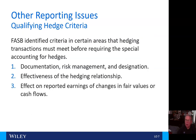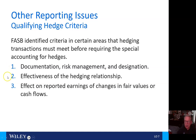Qualifying the hedge — the FASB has identified criteria in certain areas that a hedging transaction must meet before requiring the special accounting for hedges. Number one, documentation, risk management, and designation. Number two, the effectiveness of the hedging relationship. And number three, the effect on reported earnings of changes in fair value or cash flows.